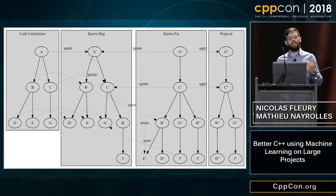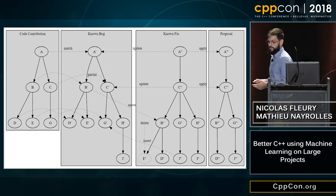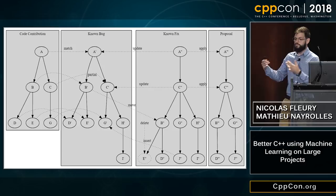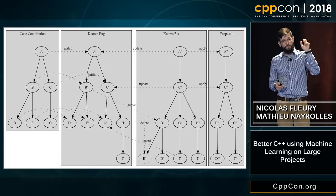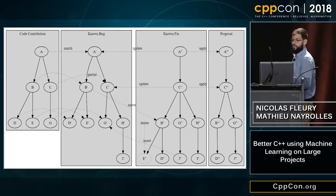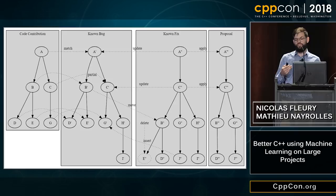That code contribution matches a known bug. That known bug was fixed by a fixed commit, and the operations applied on the known bug tree were: delete the E node, move the B node, and update values of the C node and the A node. We take those operations and apply them again to your code contribution. In the end, you get a new proposition — a change which is less risky to be made.